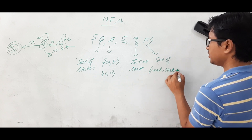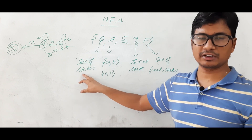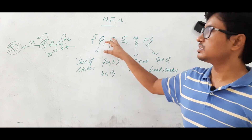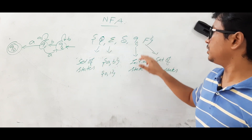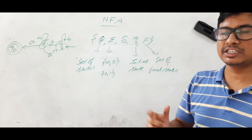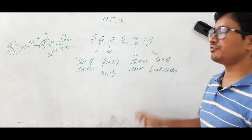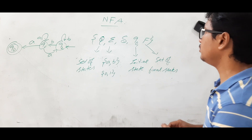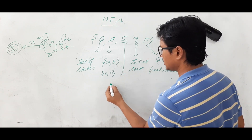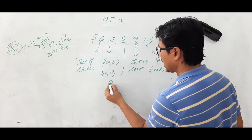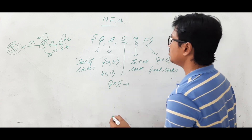Even in the DFA we discussed these same things: Q represents the set of states, Σ represents the set of alphabets, q₀ is the initial state (only one initial state), and F is the set of final states. Now we will discuss the transition function.